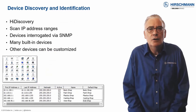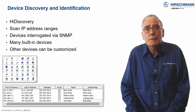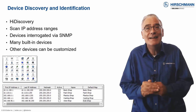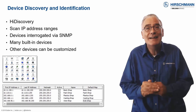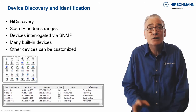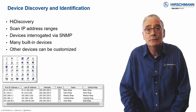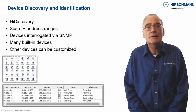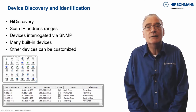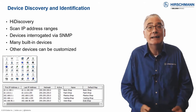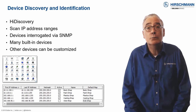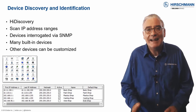For all but the smallest networks, you need an effortless way to discover and identify the devices which should be monitored. For Hirschmann devices, the HiDiscovery function can discover devices even when they do not have an IP address, and assigning an IP address is then just a couple of clicks. Industrial HiVision also allows you to scan multiple IP address ranges and display the discovered devices. Device types are then identified using SNMP. Templates for many devices are already included in Industrial HiVision, ensuring each device is accurately represented. If a template for your device is not present, the included HiFusion application will help you create a template which exactly matches your requirements.